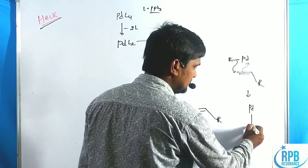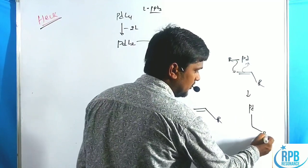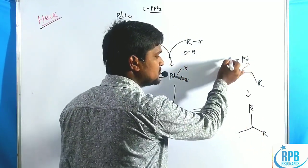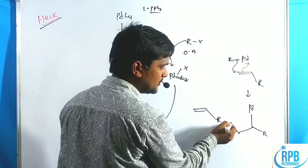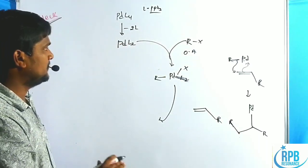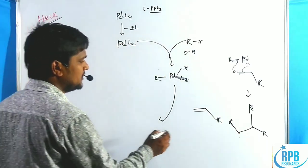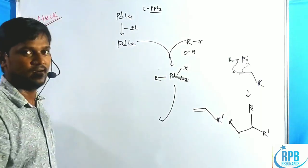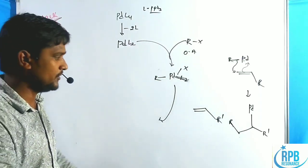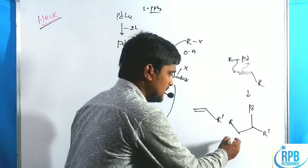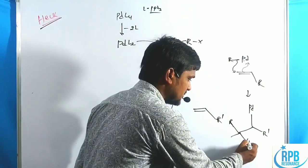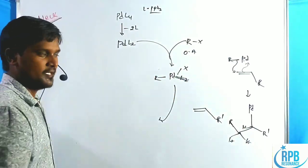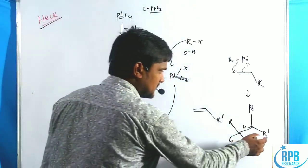This creates a palladium-carbon bond where the R group from palladium attacks the alkene. The resulting sigma complex has palladium, R group, R' group, and two hydrogen atoms in a specific geometry.